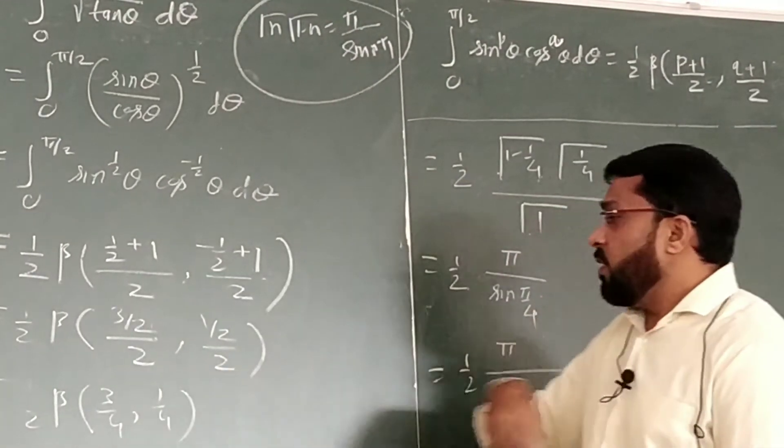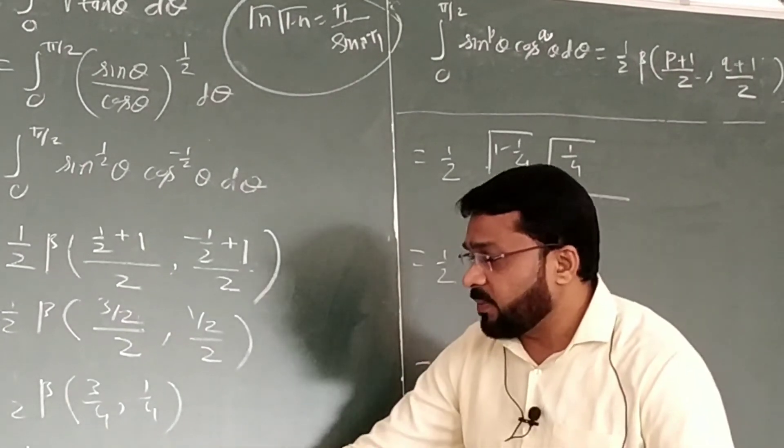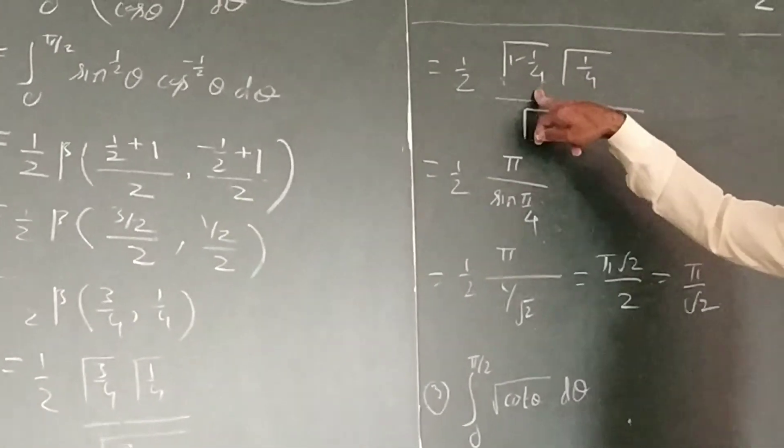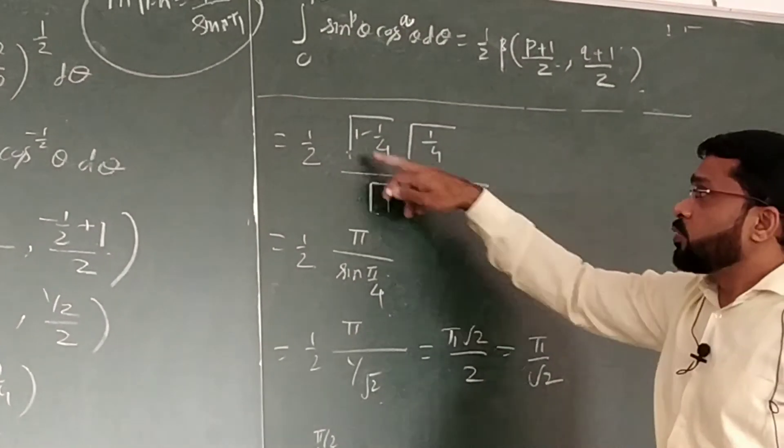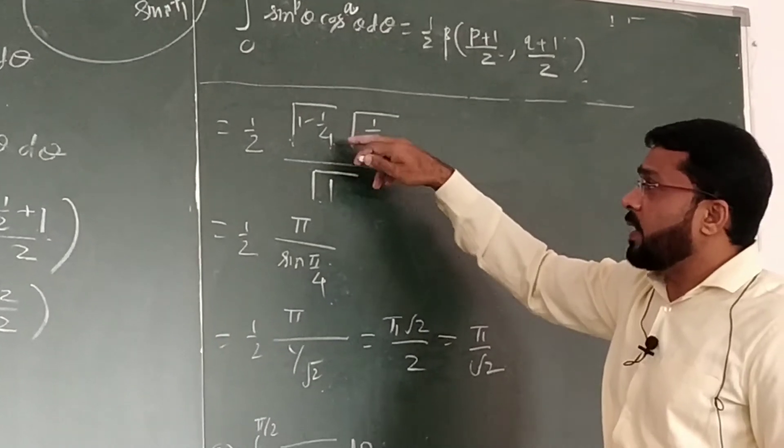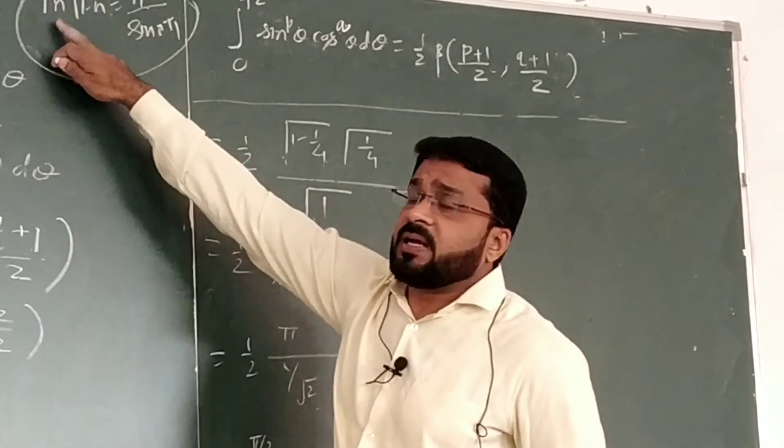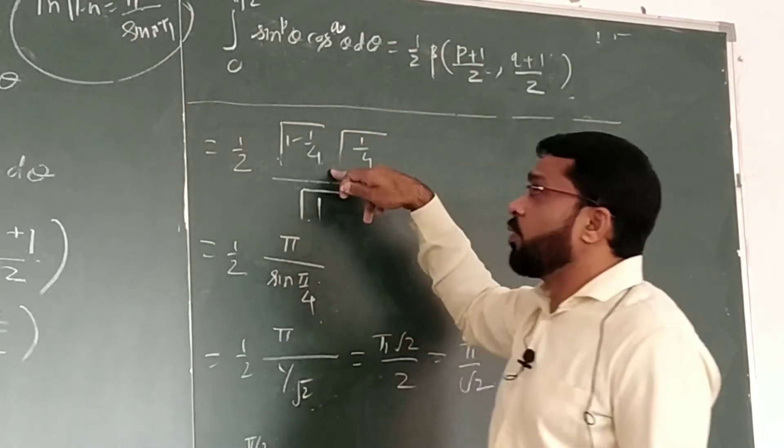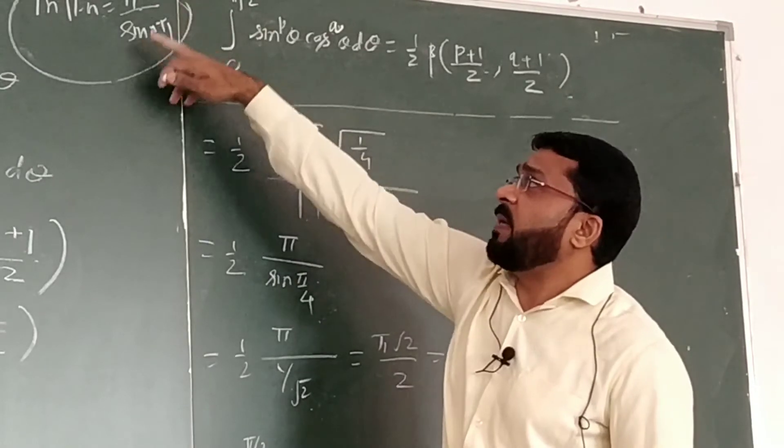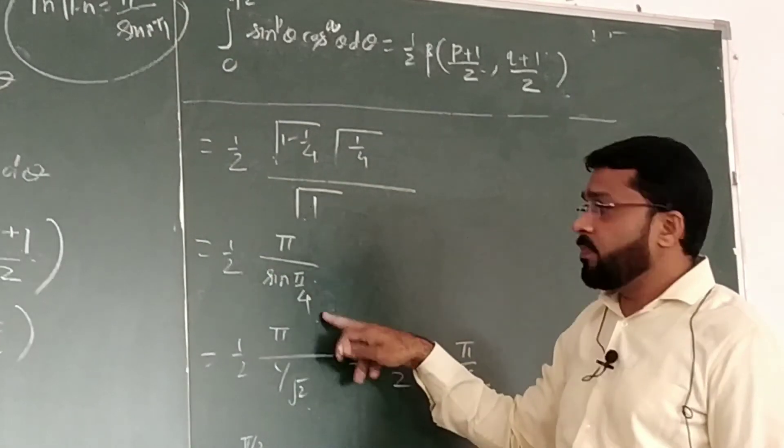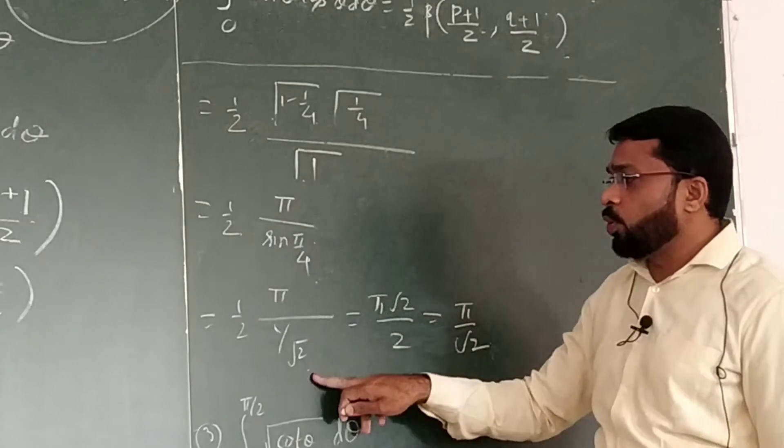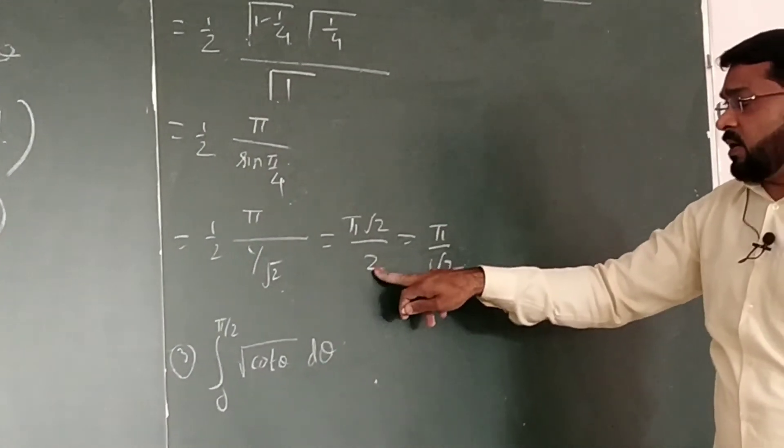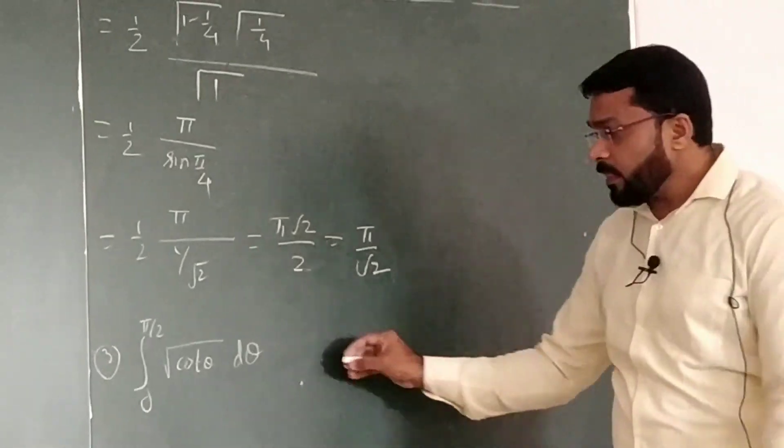So then, this gamma of 3/4, we know that, can be written as gamma of 1 minus 1/4, into gamma of 1/4. So 1 minus 1/4, if we compare with this formula, 1 minus n, and then gamma of 1/4, so n will be 1/4. Apply here formula, in the formula, π upon sin of π/4. So sin of π/4 is 1 by root 2, root 2 goes up, this is π root 2 by 2, or we can say, we can reduce this to π by root 2.